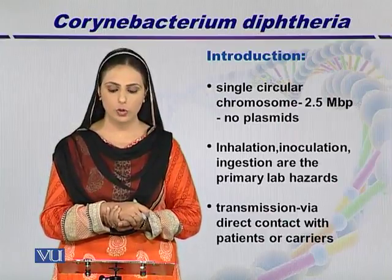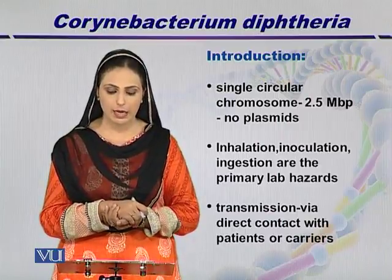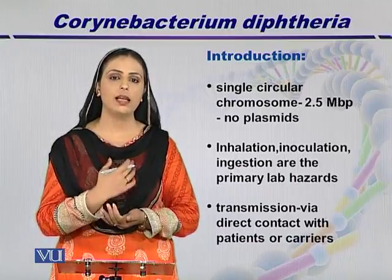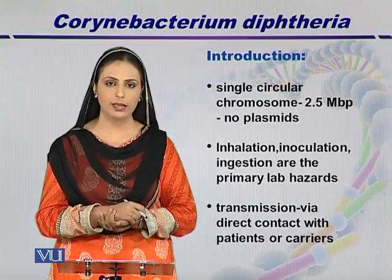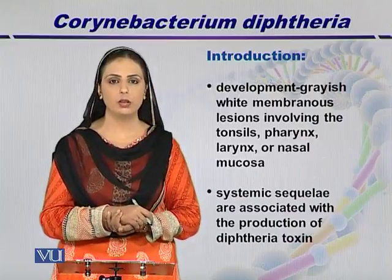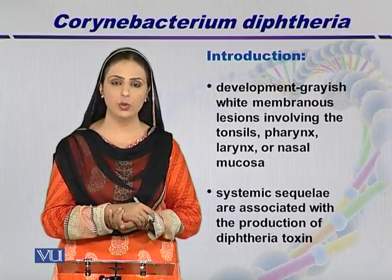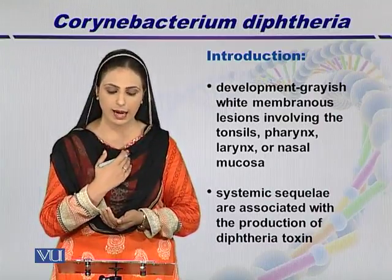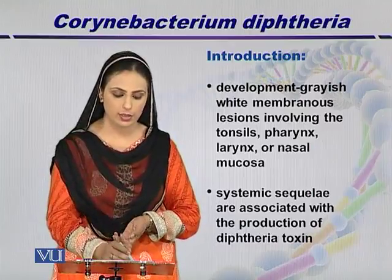Corynebacterium diphtheria has a single circular chromosome with a size of 2.5 megabase pairs and no plasmids. It can be inhaled, ingested, or transmitted through inoculation, creating lab hazards. It is transmitted by direct contact with an infected person or carriers. The pseudomembrane it forms is a greyish-white membrane lesion involving the tonsils, pharynx, and nasal mucosa, and systemic sequelae are associated with the production of diphtheria toxin.